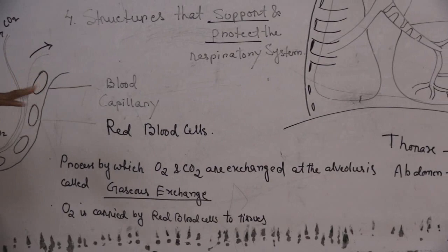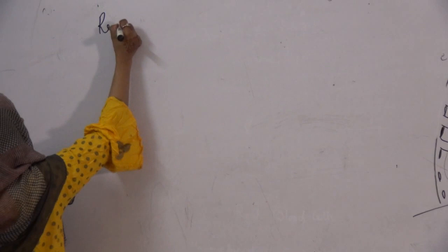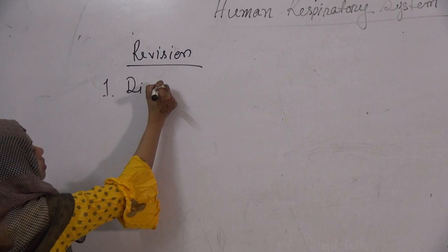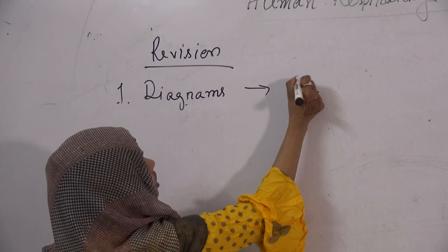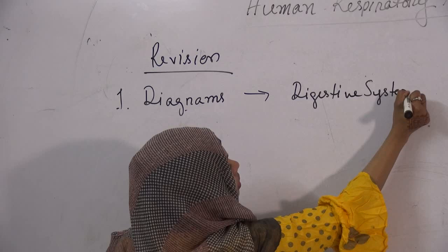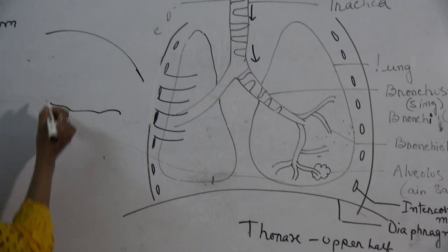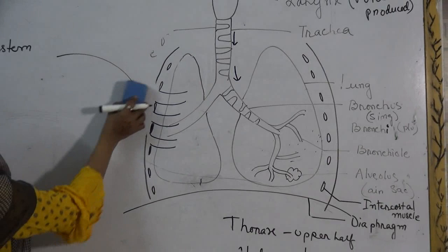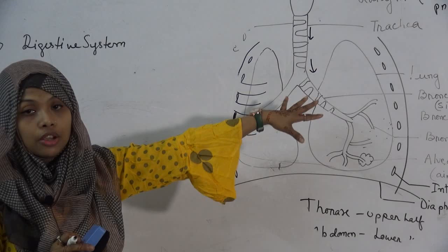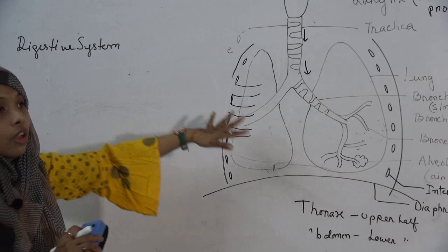That takes care of the respiratory system. Now let me move on to the final revision part. A very quick revision point: first of all, diagrams. Whatever diagrams you have done — the human digestive system — I want you to learn how to draw and label them properly and accurately. About labeling: please draw all straight lines, no squiggly lines. All diagrams need to be in pencil; labelings need to be clear, no smudging, no double writing. Make sure your diagram is clean and neat so I can mark it properly.